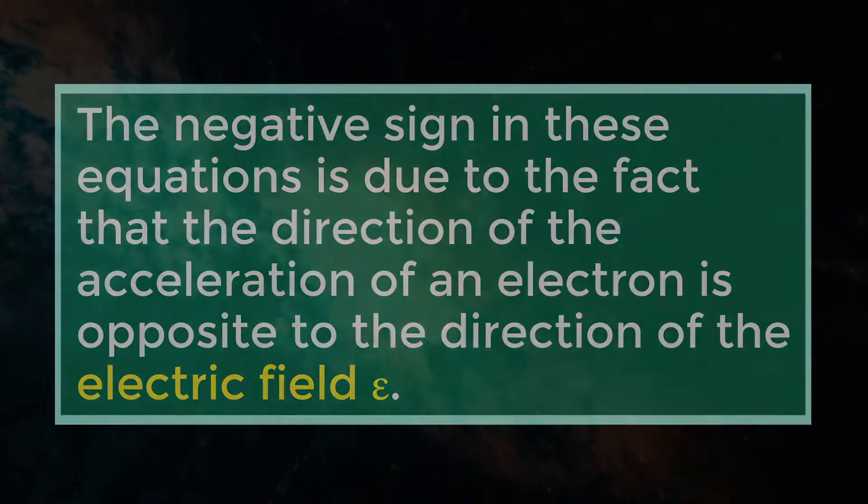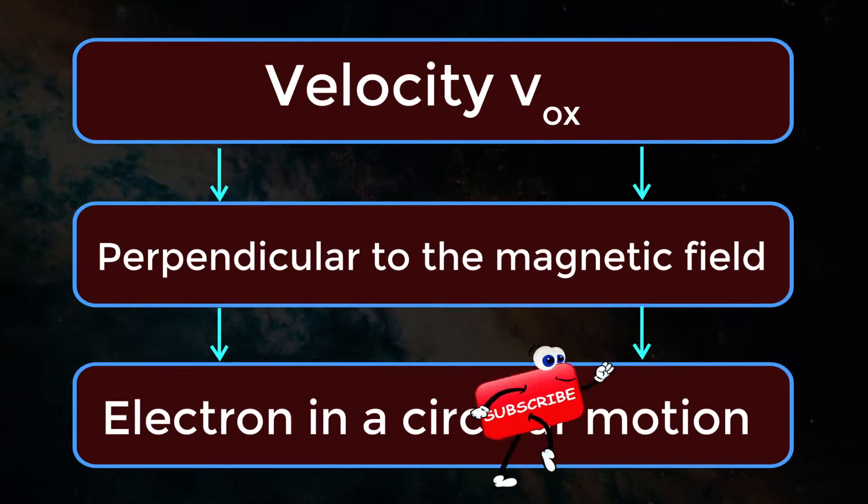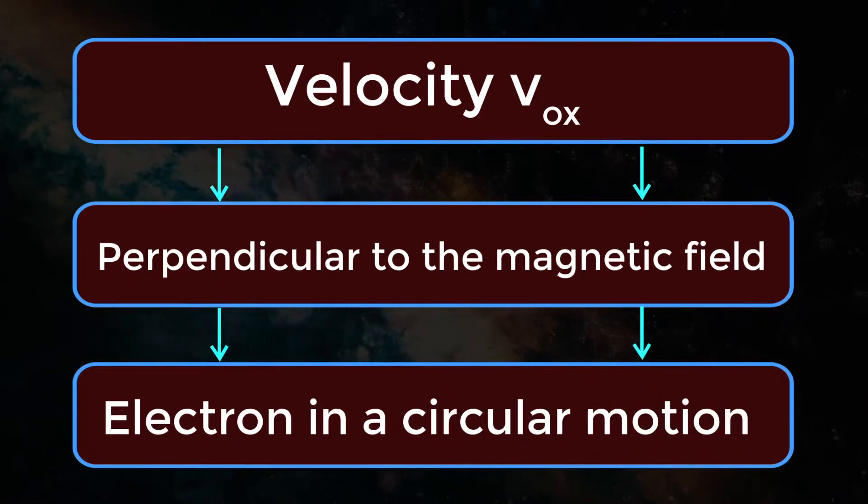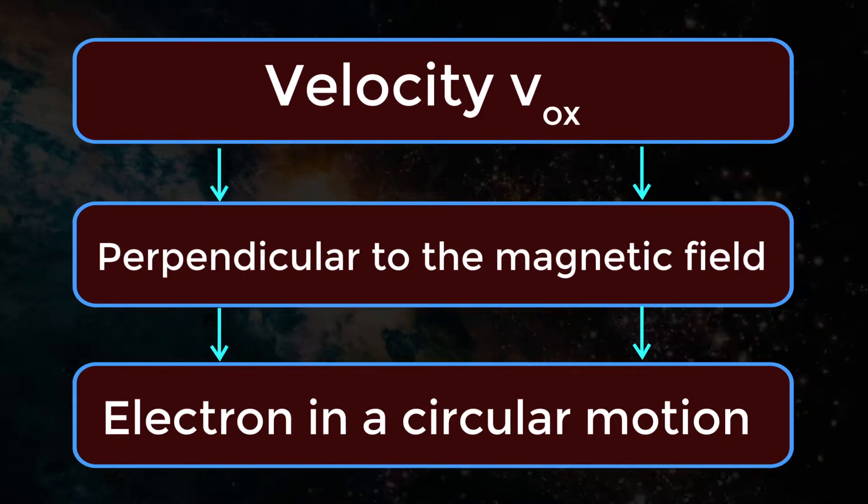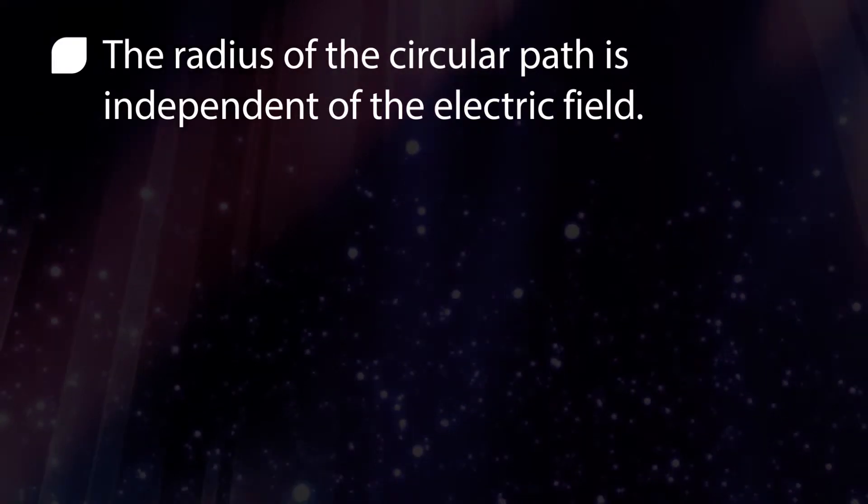If initially a component of velocity v0x perpendicular to the magnetic field exists, this component along with the magnetic field will set the electron in a circular motion. The radius of the circular path is independent of the electric field.